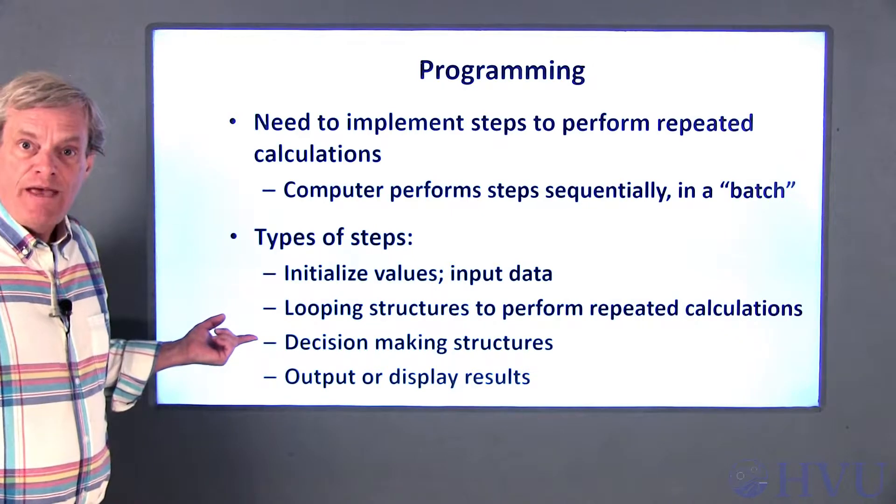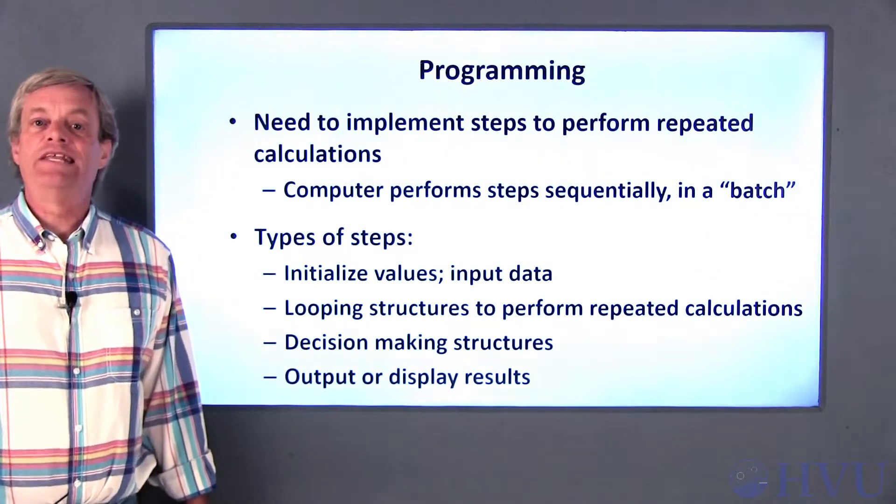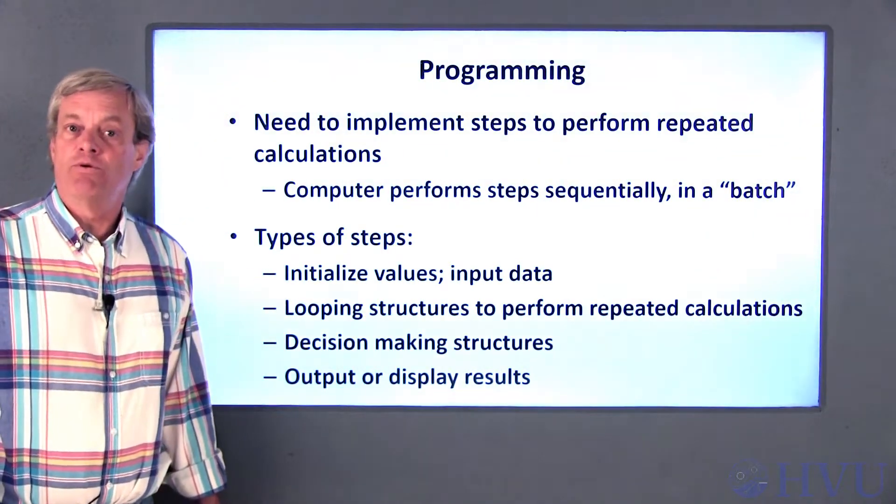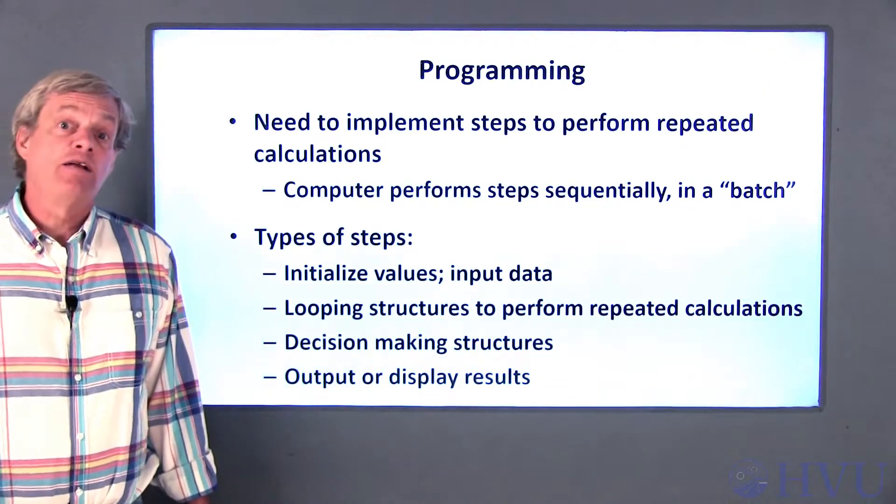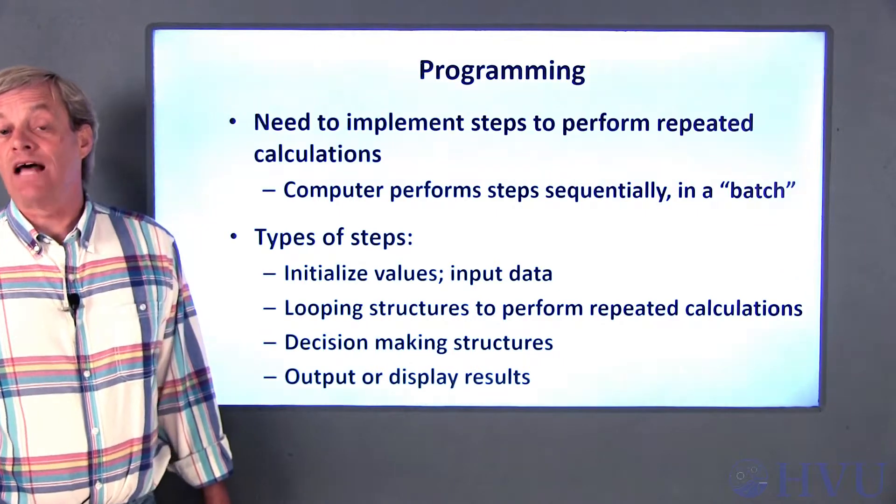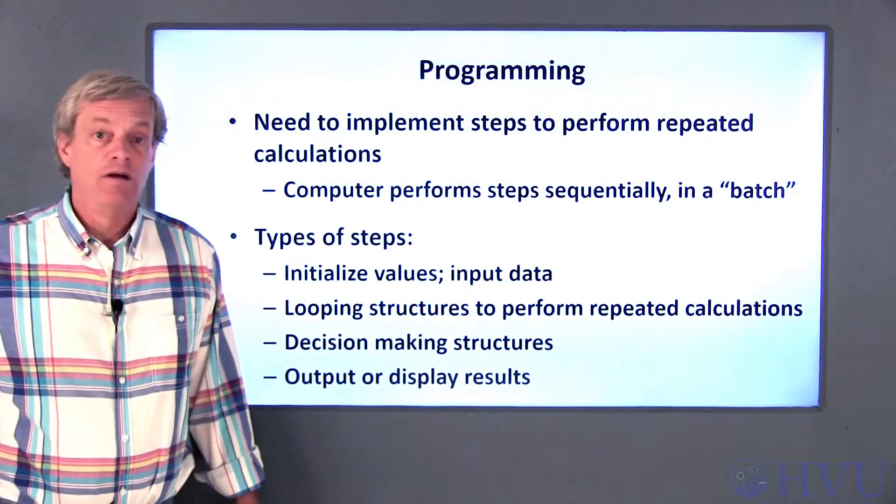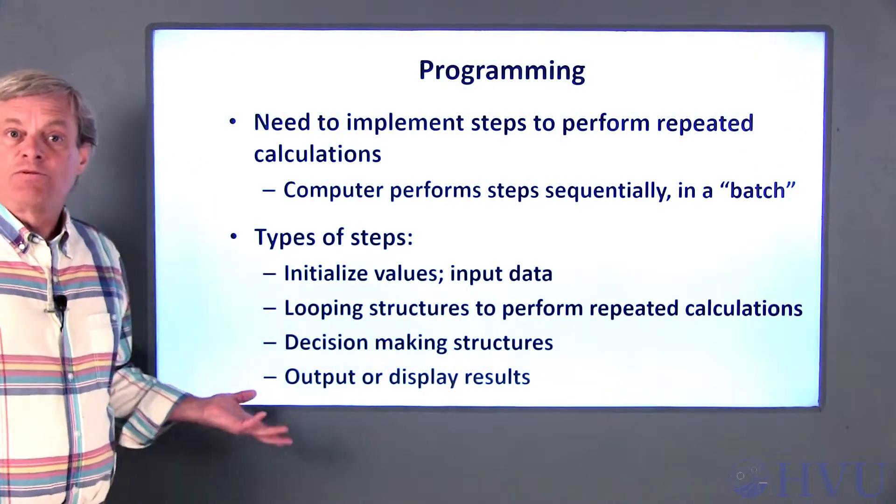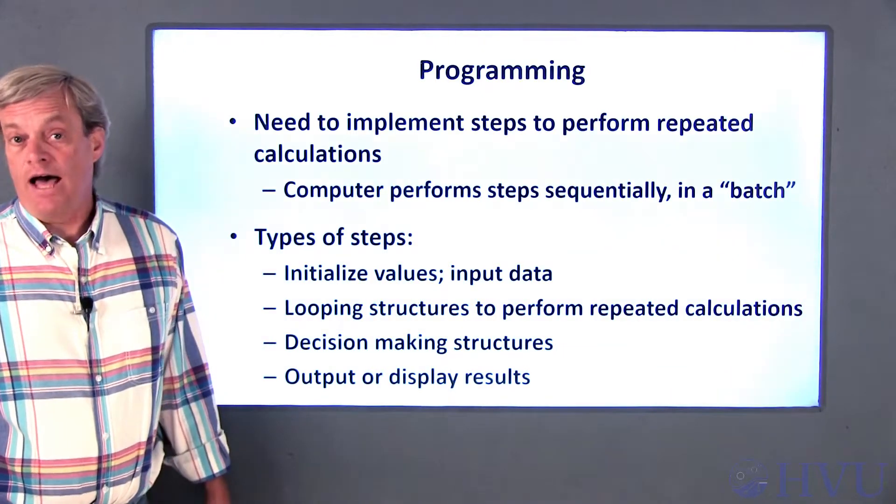Decisions will need to be made. In our example of finding the zero of a function, we needed to decide which side of the midpoint contained a sign change, and we also needed to decide when the interval had become small enough so that we could stop the iteration process. Finally, the program needs to provide results to the user. This could be a number or a plot.